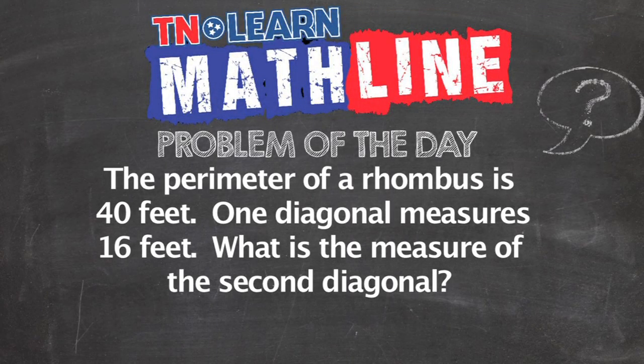The perimeter of a rhombus is 40 feet. One diagonal measures 16 feet. So what would be the measure of our second diagonal?